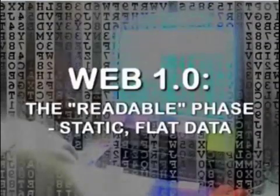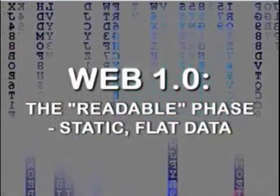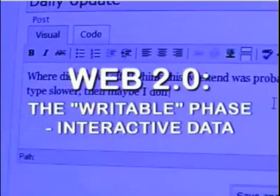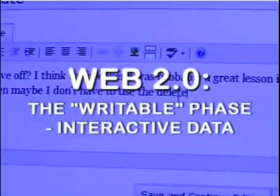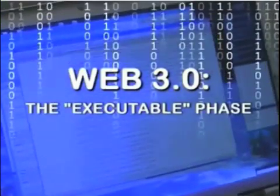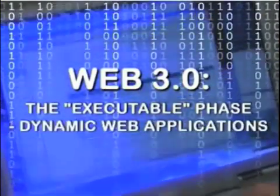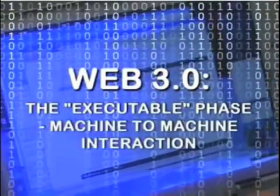One definition from the Wikipedia discussion tab calls Web 1.0 the readable phase of the World Wide Web — static, flat data. Web 2.0, the writable phase — interactive data, social networking. Web 3.0, the executable phase — dynamic applications, interactive services, machines talking to machines.